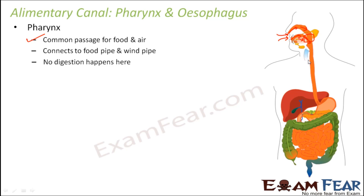The wind pipe is just behind the food pipe. The air we breathe in goes into the wind pipe, and the food we eat goes into the food pipe. Pharynx acts as a common entry point — like an entry gate where a person checks your ticket and sends you in the right direction. If it is food, pharynx sends it to the food pipe; if it is air, it sends it to the wind pipe. No digestion happens in the pharynx.